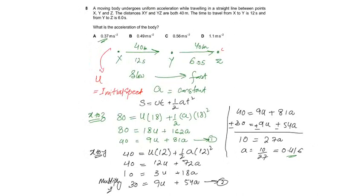Now all we need to do is subtract equation 2 from equation 1. 40 equals 9U plus 81A minus 30 equals 9U plus 54A. So this will become 10 equals 27A, so A will become 10 divided by 27, which is 0.37 approximately.